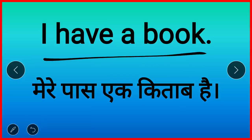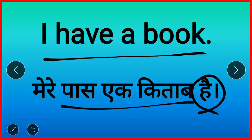Example: 'I have a book' — mere paas ek kitab hai. It means 'rakhna' or 'pass hona.' Look — it is in the present tense, it ends in 'hai': mere paas ek kitab hai. And 'have' is used only with I, you, we, and they.